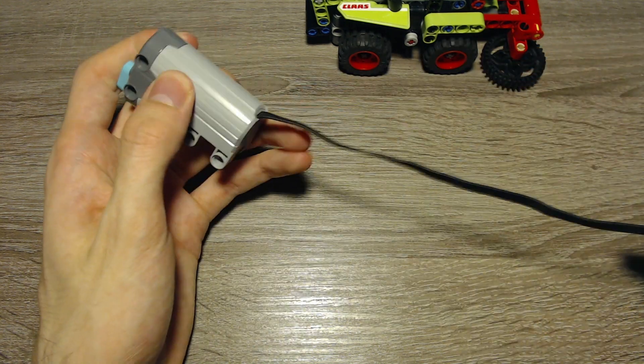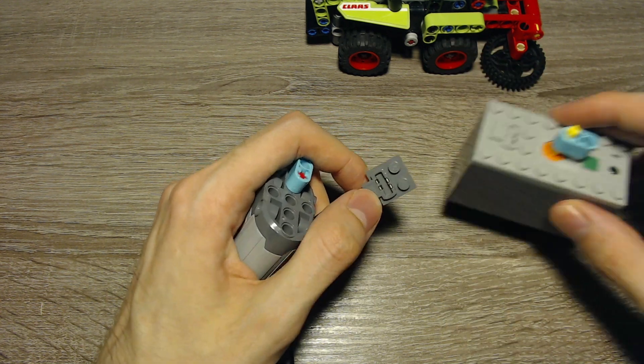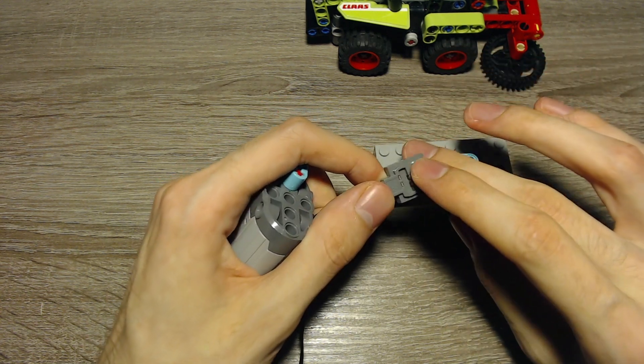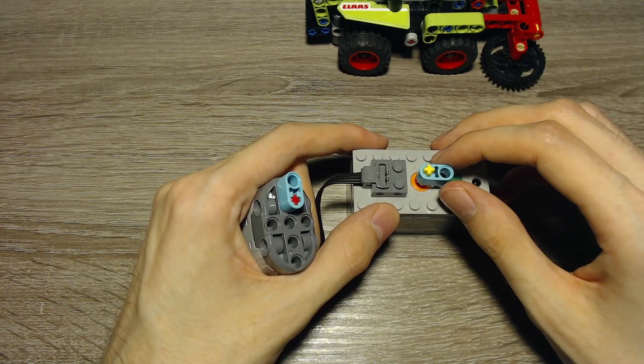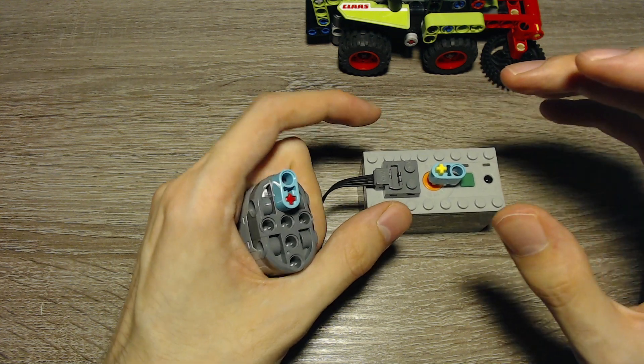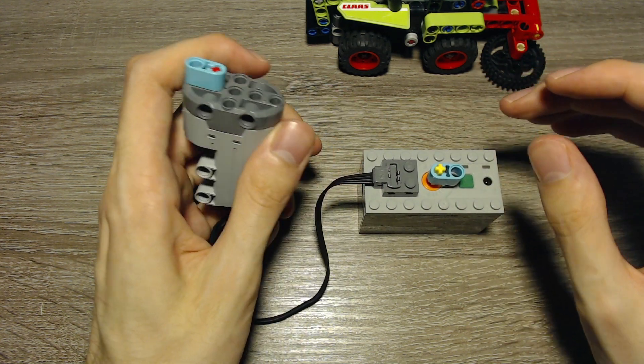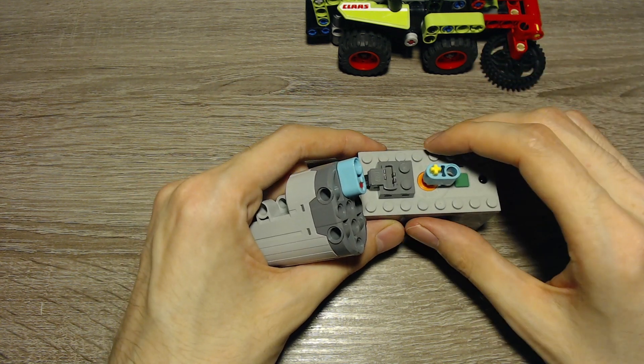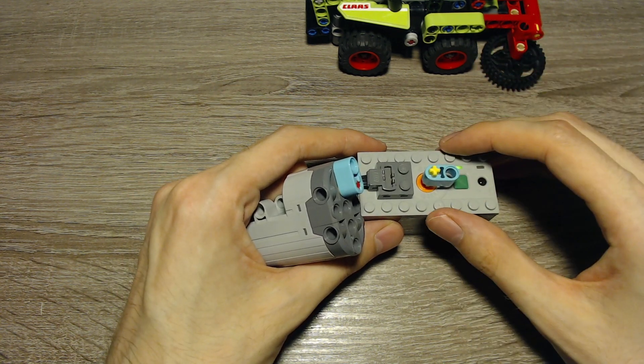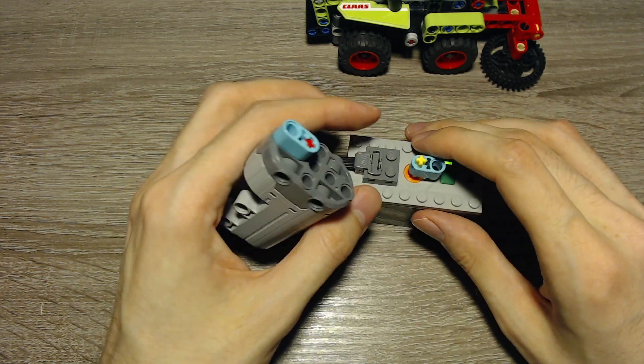And then you can connect the Power Functions plug to a Power Functions battery box. You can't use the 9V adapter cable as power source. Normally you would use a receiver to connect it to the battery box, but in my case for the demonstration I will use this normal rechargeable battery box. And you saw that the motor already moved when I turned it on.